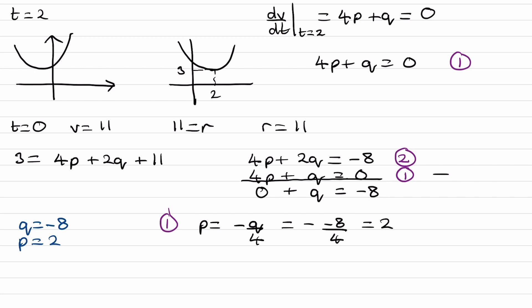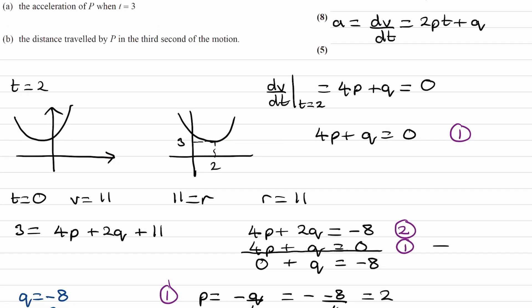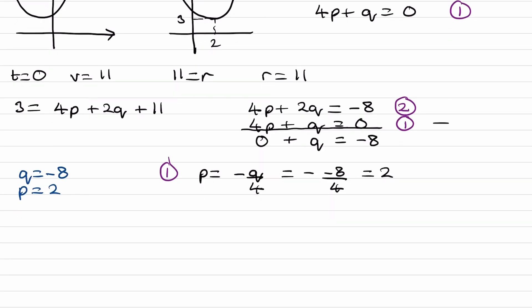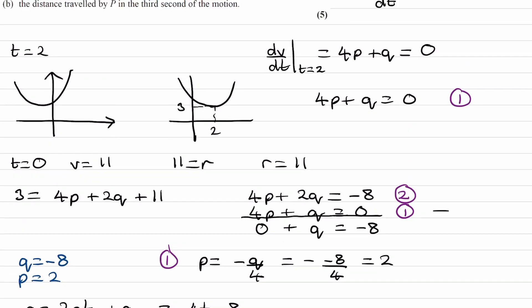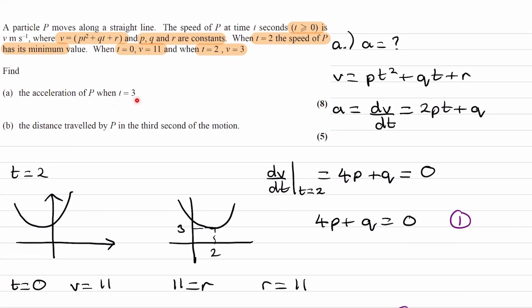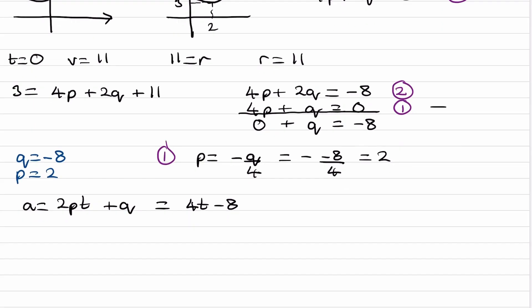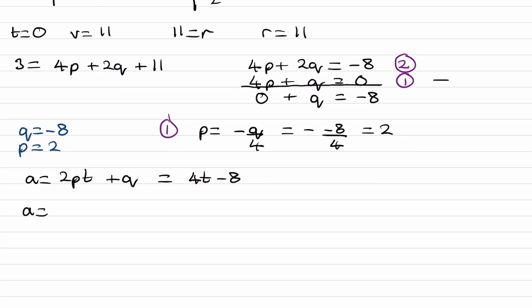Now we put p equals two and q equals negative eight into our acceleration equation. Acceleration is 2pt plus q, which becomes 4t minus eight. We want the acceleration when t equals three: four times three minus eight equals twelve minus eight, which is four.